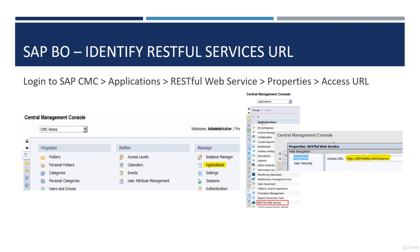If you have login access to CMC, follow these steps to find the URL for RESTful Web Services. First, login to CMC. Click Applications under Manage. Then choose RESTful Web Service. Right-click, choose Properties, and on the pop-up window you will notice the URL for RESTful Web Services.